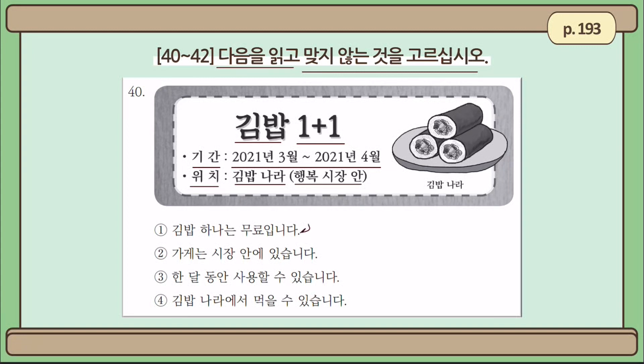Number 1: 김밥 하나는 무료입니다 — one roll of 김밥 is free. Yes, it appears so. Number 2: 가게는 시장 안에 있습니다 — the shop is inside the market. Yes, 행복시장 안.